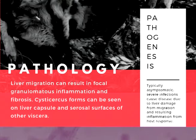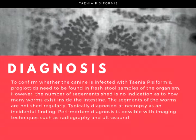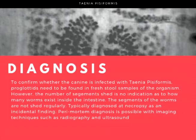T. pisiformis is typically diagnosed at necropsy as an incidental finding. Perimortem diagnosis is possible with imaging techniques such as radiography and ultrasound. When looking for an infection in dogs, there will be gravid proglottids with striated eggs seen in the feces, which can be found using a fecal float. This is essentially a stool examination that can easily be done by a vet.